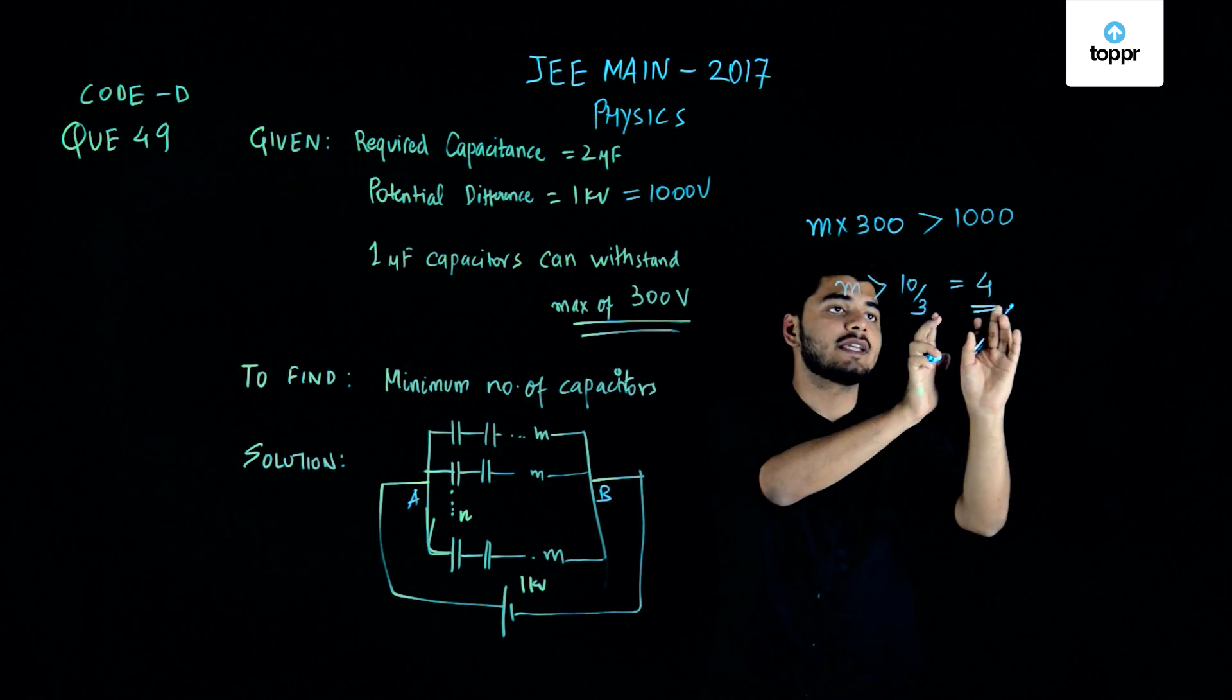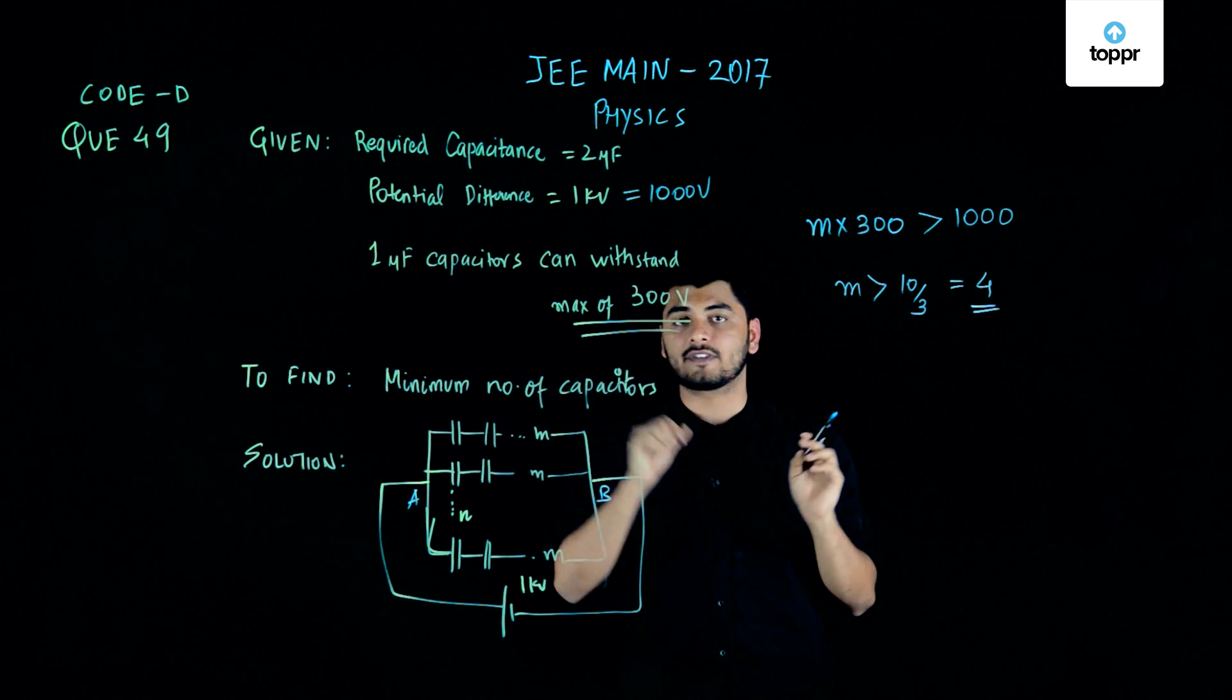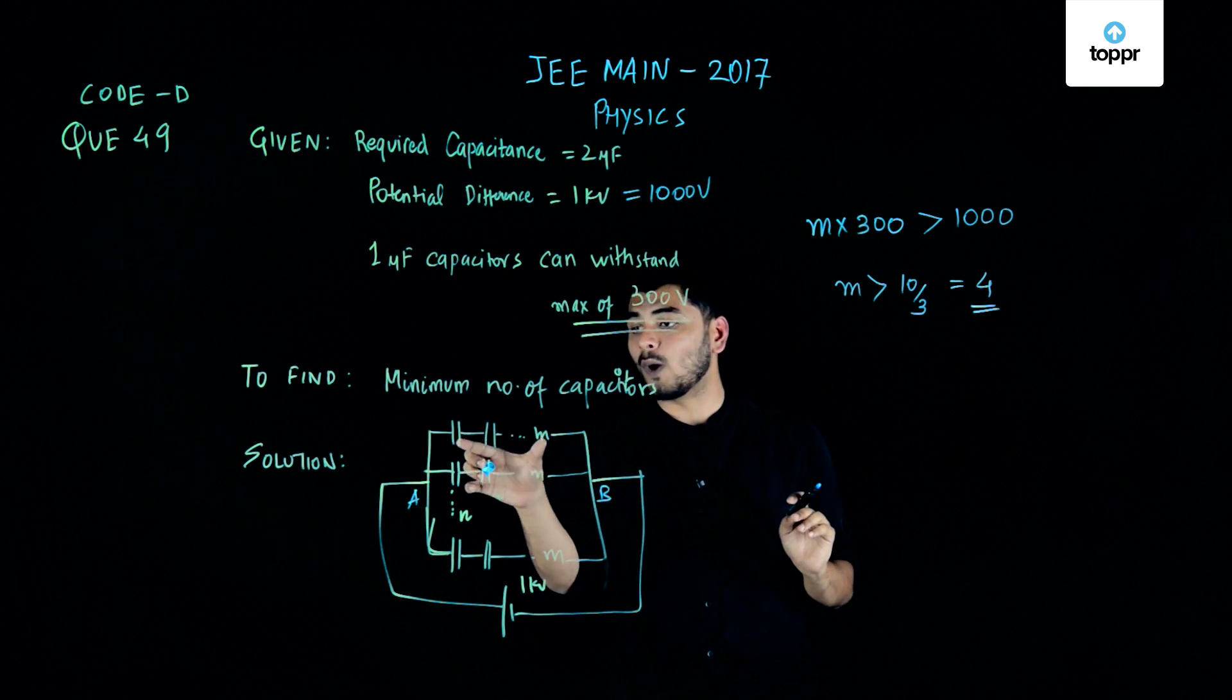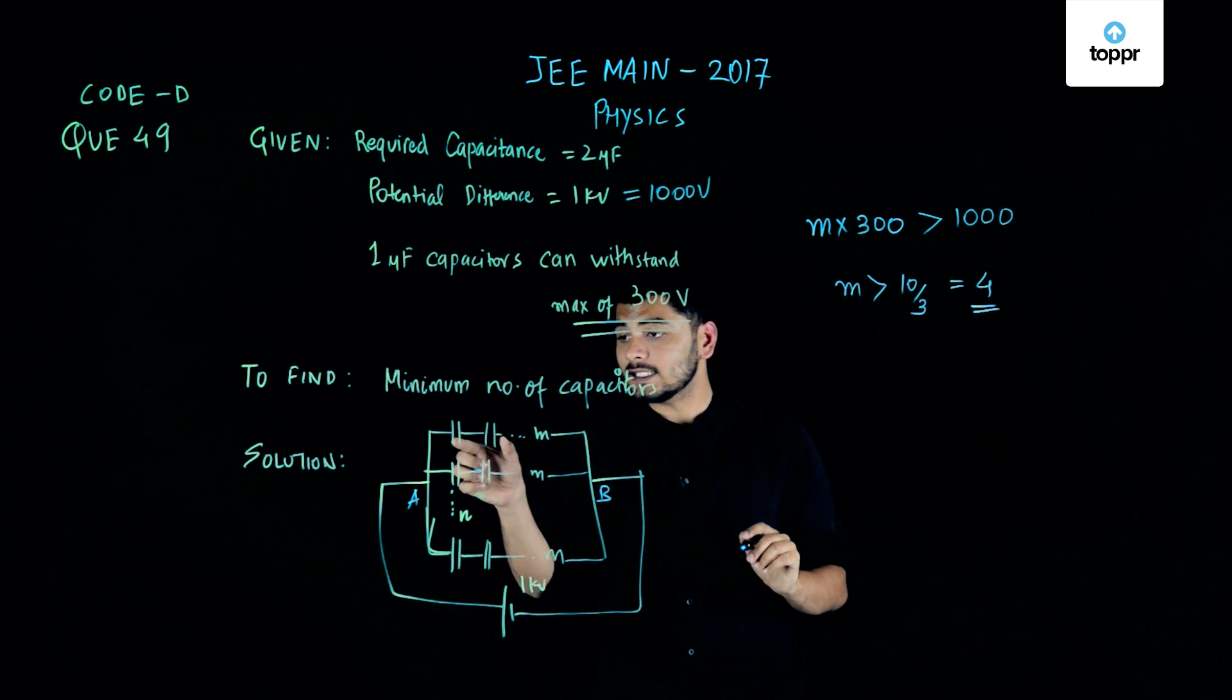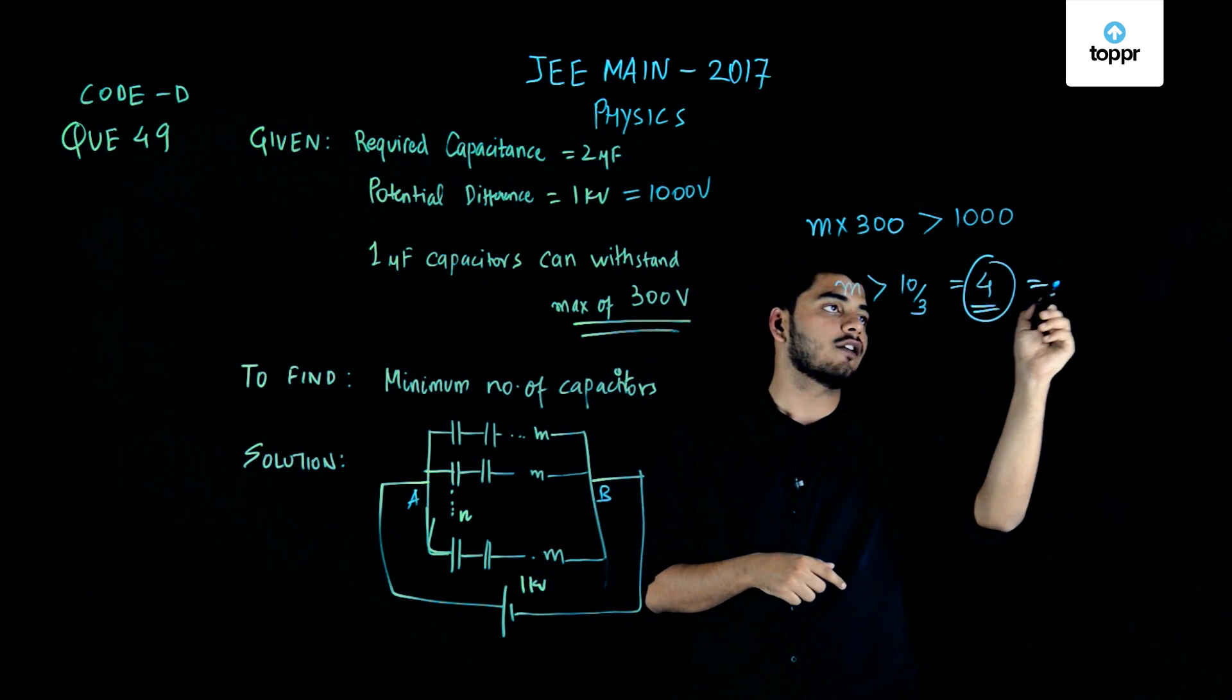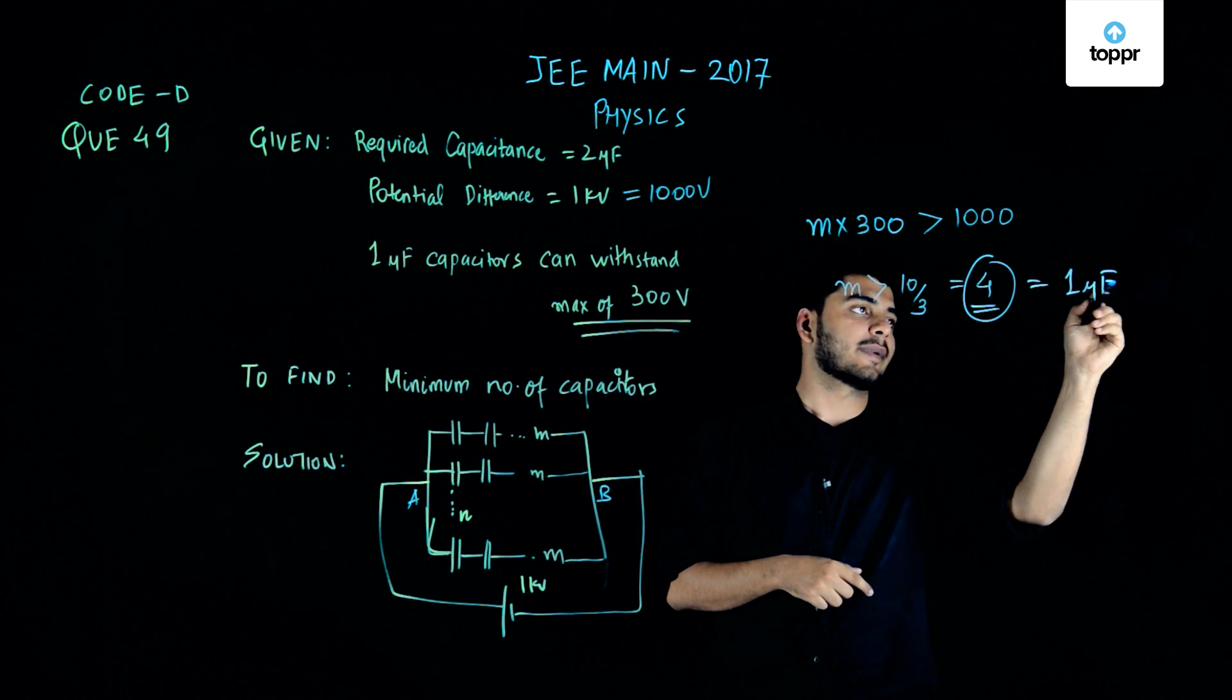So my m has to be equals to 4 for minimum number of capacitors. Now this is the number of capacitors that must be in one branch. Now let us calculate the equivalent capacitance of 4 capacitors each of 1 microfarad capacitance.